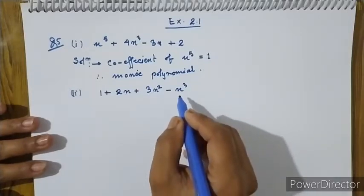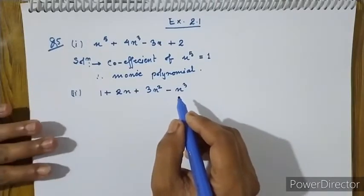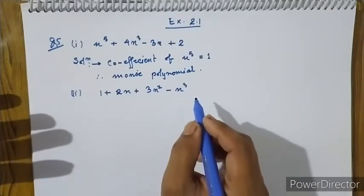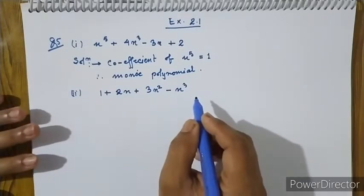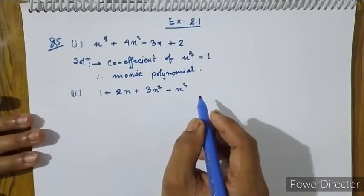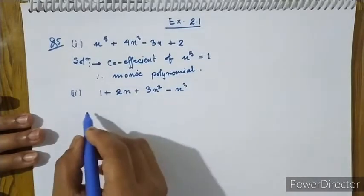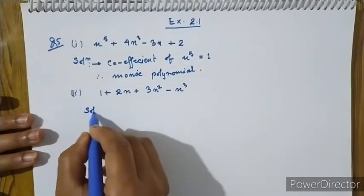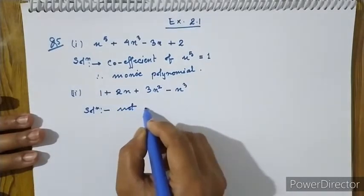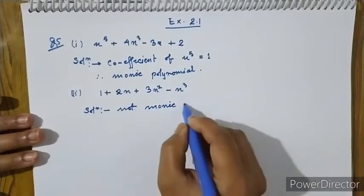The degree is equal to 1. The leading coefficient is minus 1, so it is not monic. Therefore this polynomial is not monic.